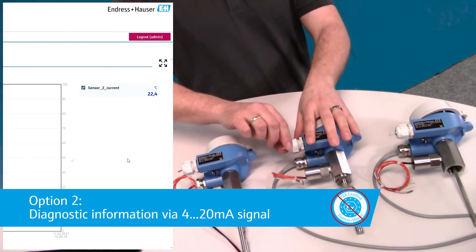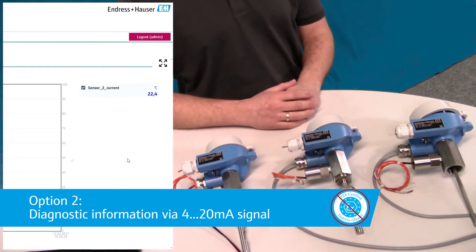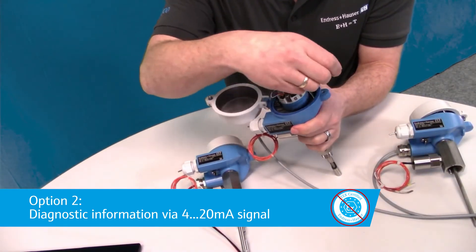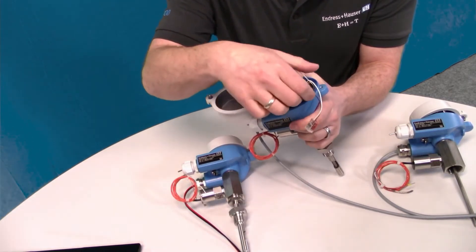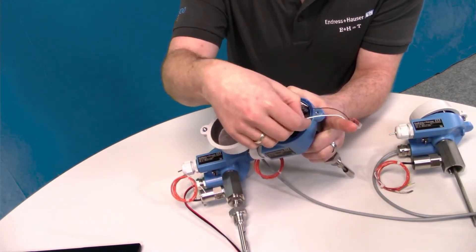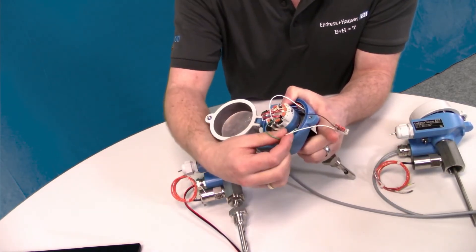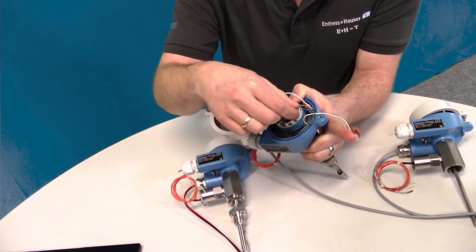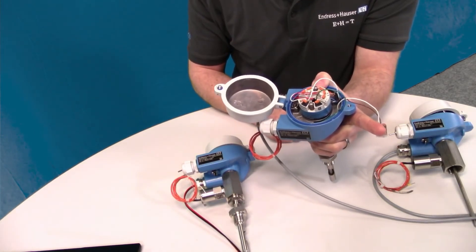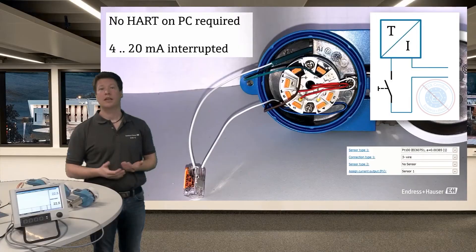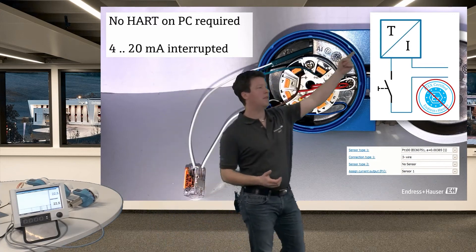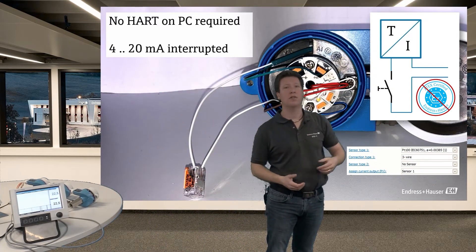Option two shows an interruption of the 4 to 20 milliamp loop in case of an error. How is the wiring on that? Looking into the head we got those two wires coming from the PLC, the 4 to 20 milliamp loop. We got that pressure switch in between in that loop and then going to the transmitter. And you see the pressure switch directly interrupts that 4 to 20 milliamp signal. In an overview that looks like this. We have the transmitter and in the HART loop we got the interruption of the pressure switch.